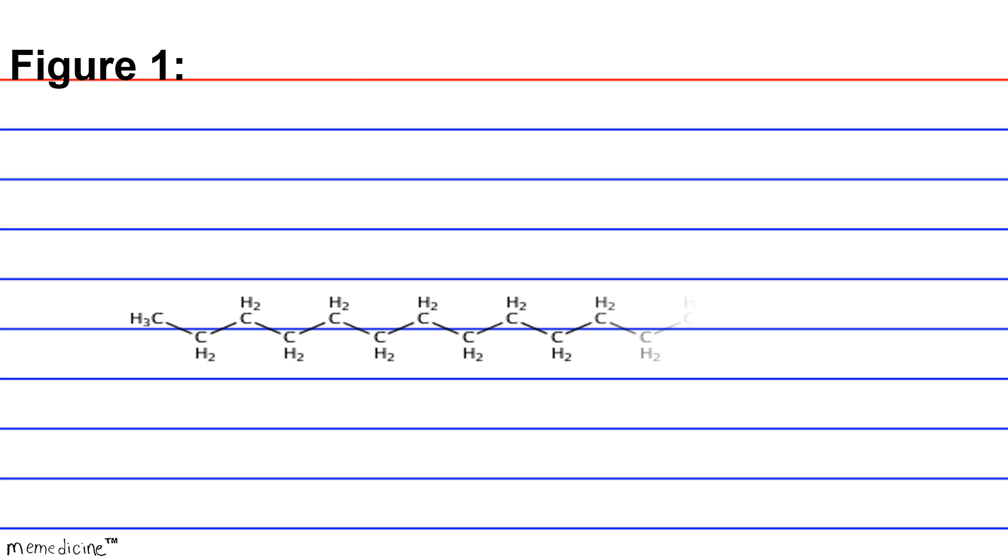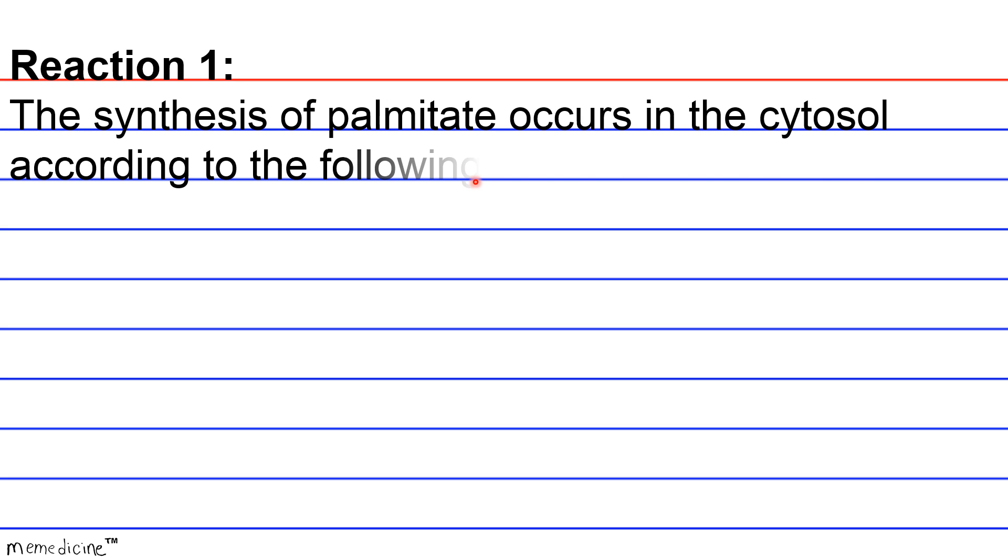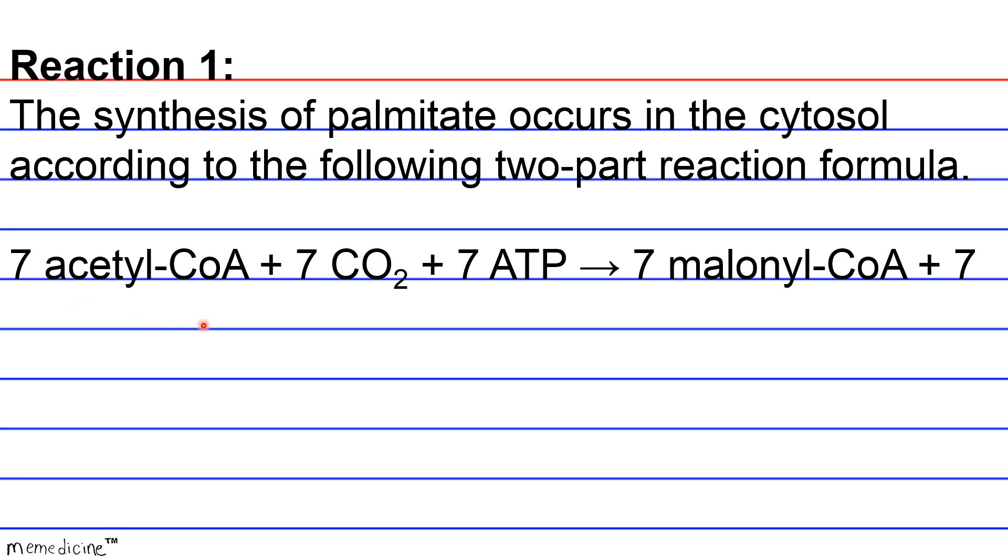Figure 1: palmitate C16H32O2. And here we see it's like a carboxylic acid. Reaction 1: the synthesis of palmitate occurs in the cytosol according to the two-part reaction formula. So you take 7 acetyl-CoA plus 7 carbon dioxide plus 7 ATP—777, perfection cubed. And then you're going to yield 7 malonyl-CoA plus 7 ADP, that's adenosine diphosphate, plus 7 phosphates.